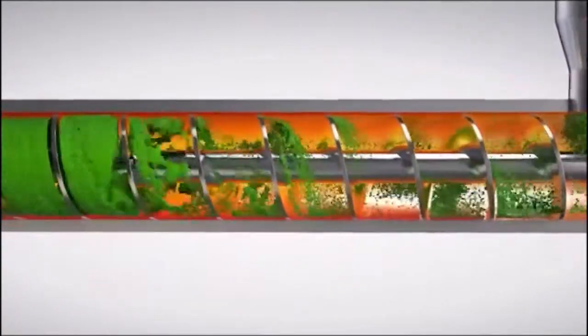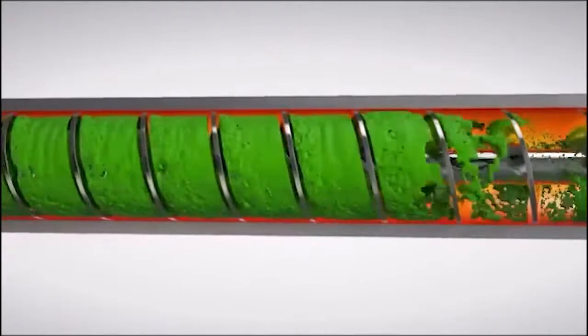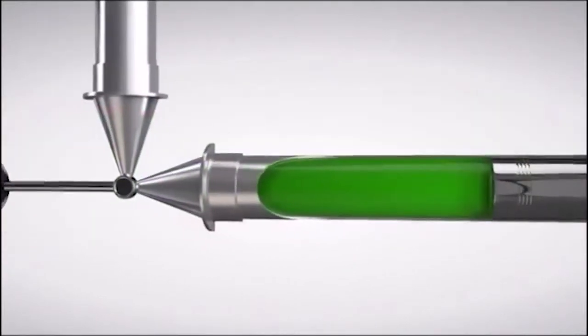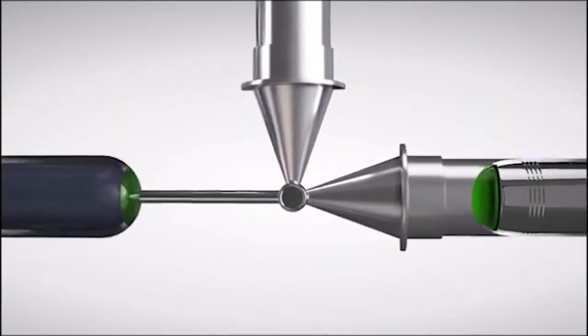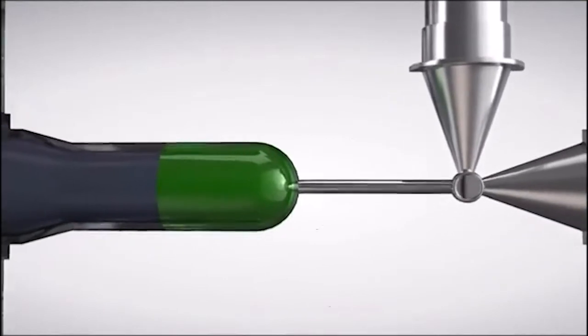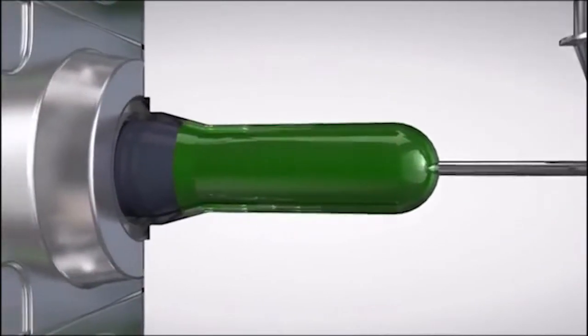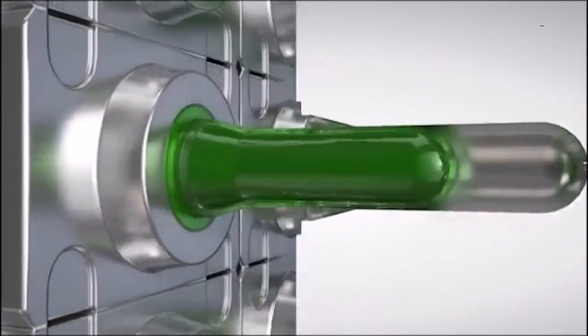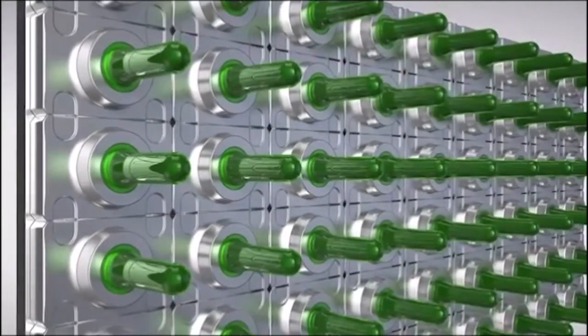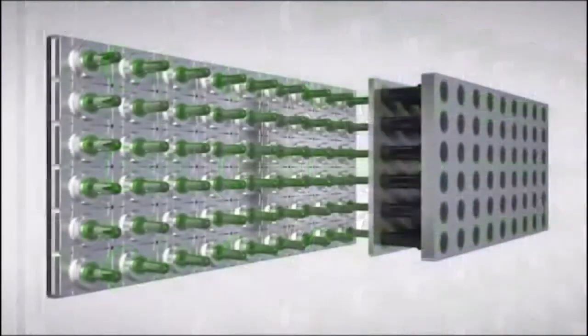Pellets are then worked along a screw and heated until they melt at 260 degrees Celsius. The melted material is injected at high pressure into a multi-cavity mould. A mould contains usually between 50 and 150 preforms.